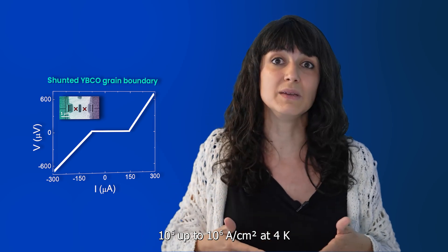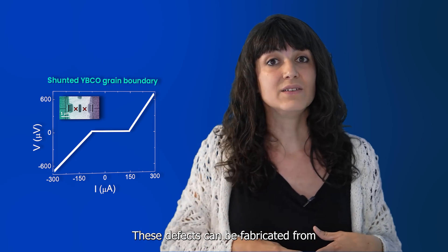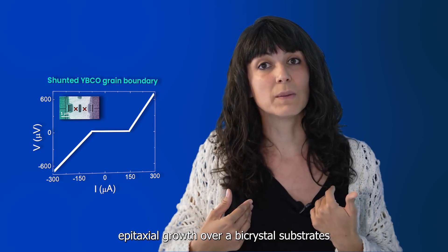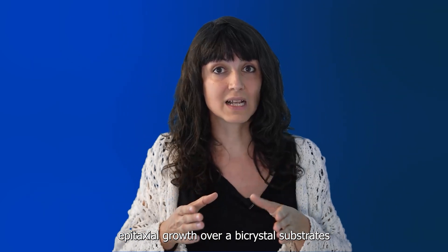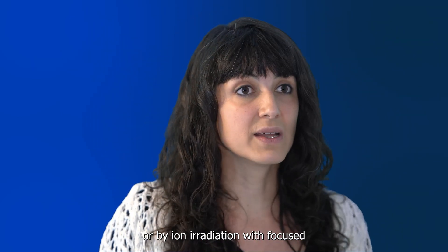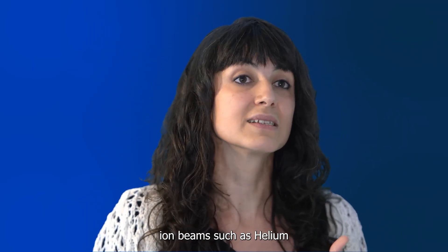Grain boundaries in YBCO exhibit Josephson behavior with large critical current densities of 10 to the 5 up to 10 to the 6 Ampere per centimeter square at 4 Kelvin. These defects can be fabricated from epitaxial growth over a bicrystal substrate or by ion irradiation with focused ion beams such as helium.